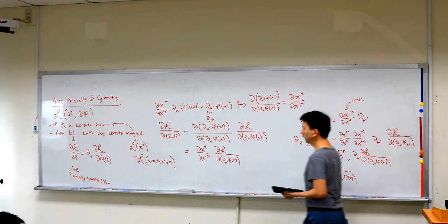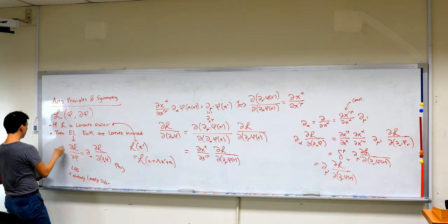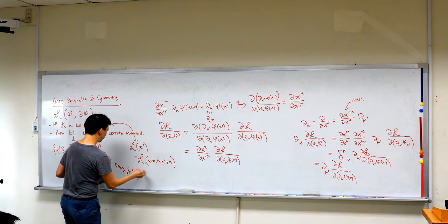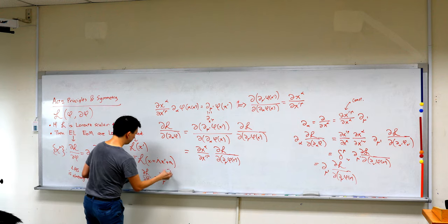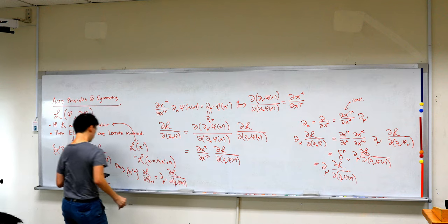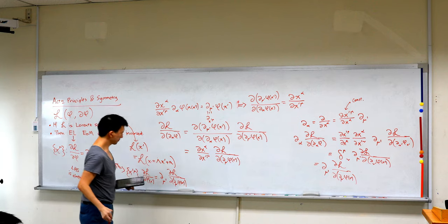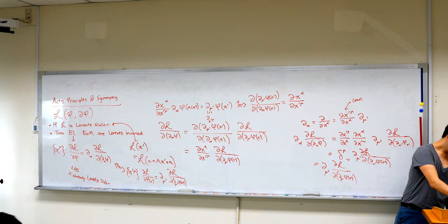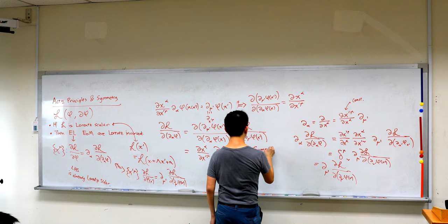And that's what we mean by Lorentz scalar — the derivatives take the same form in whatever inertial frame you are, and the rest of the functional form you just plug in x for x-prime. We have shown that the Euler-Lagrange expression in the x frame takes the same form in the x-prime frame. It's good to be able to show it explicitly.